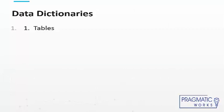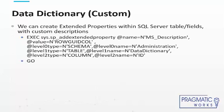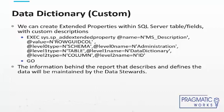Another key component is data dictionaries. We like to store the tables, the fields, the field type, and the description. A lot of times we create what are called extended properties — you can execute this command and it'll store the information. You can store this in a table and put a Power BI report on top of it, available on the Power BI portal, so that self-service users can search through it. That's a custom solution we've implemented in the past.